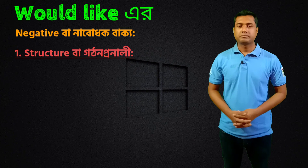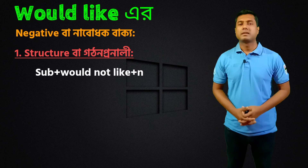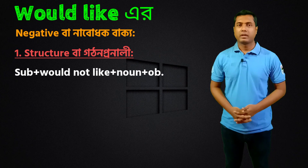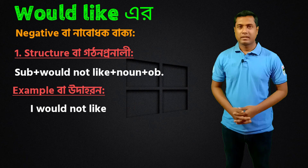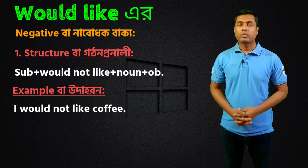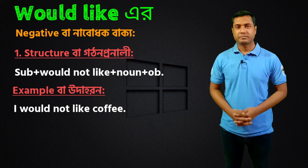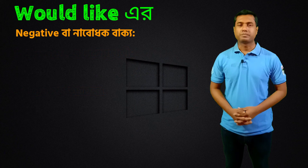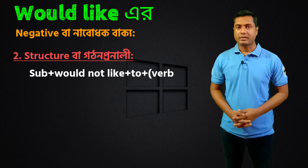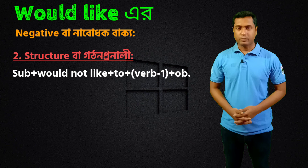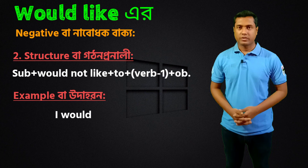Negative structure number one: Subject + would not like + noun/object. Example: I would not like to travel — expressing that one does not wish to do something.